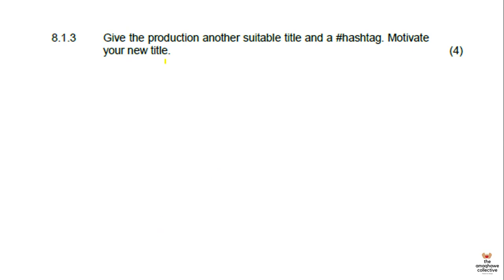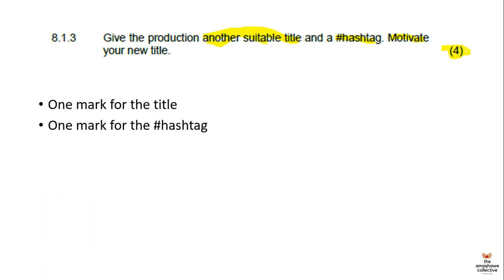Question 8.1.3 asks you to give the production another suitable title and a hashtag, and to motivate your answer, for four marks. For example, I would call it Our Girls, Our Stories — giving it a South African edge where 'our' refers to South African girls. The hashtag would be #GirlsAndStories. I would motivate that I am writing from a South African context. You get one mark for the title, one for the hashtag, and two for the motivation.